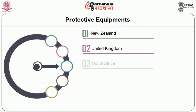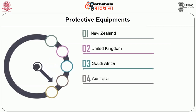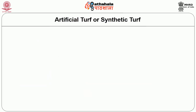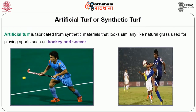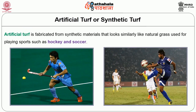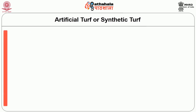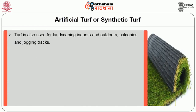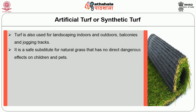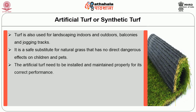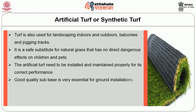Cricket protective gear is also exported to countries like New Zealand, UK, South Africa, Australia and USA. Artificial turf is fabricated from synthetic materials that look similar to natural grass, used for playing sports such as hockey or soccer. It is also used for landscaping, indoors and outdoors, balconies and jogging tracks. It is a safe substitute for natural grass that does not have any dangerous effect on children or pets. The artificial turf needs to be installed and maintained for its correct performance. A good quality sub-base is very essential for ground insulation.